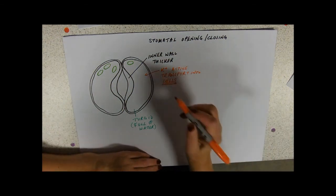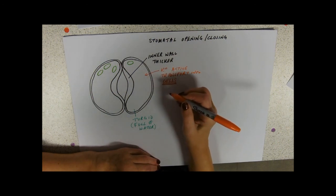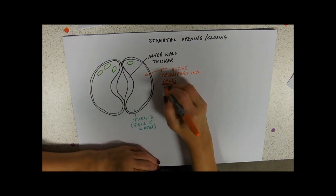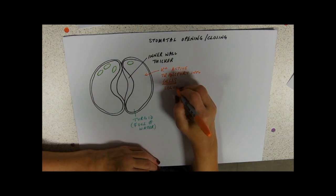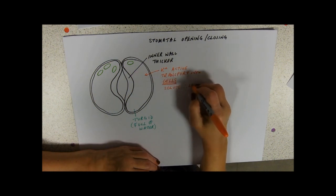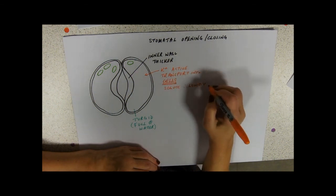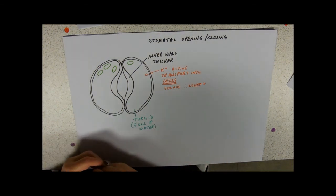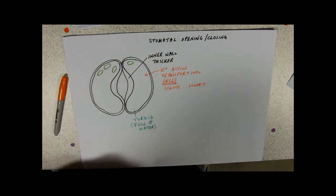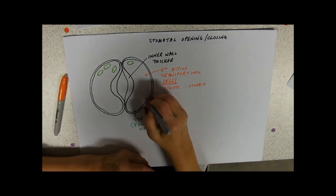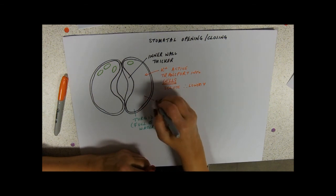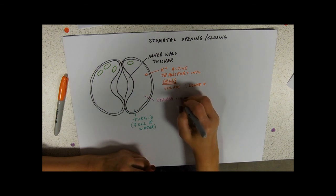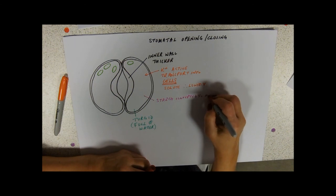So potassium ions, obviously these are a solute and therefore they lower the water potential. At the same time we've also got reactions going on inside the guard cells, so here we've got starch converted to malate.